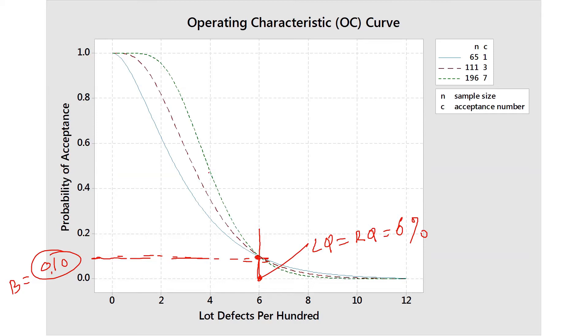These three different plans that I have created: C value 1, sample size 65; C value 3, sample size 111; C value 7, sample size 196. In either of these cases, the consumer does not really care which one you use because they're going to get the exact same risk by any of these plans.